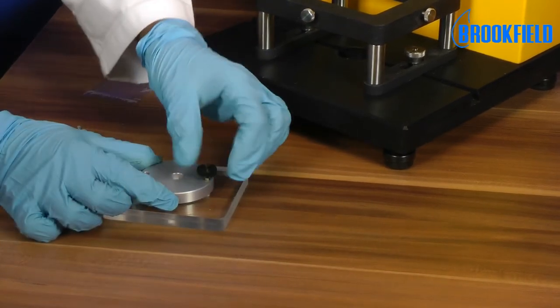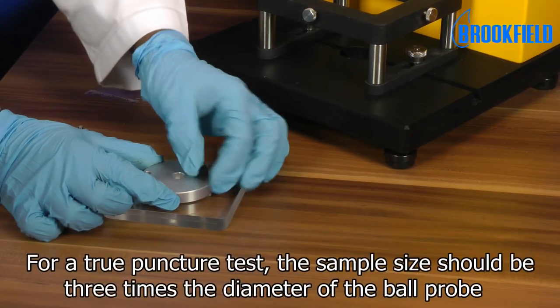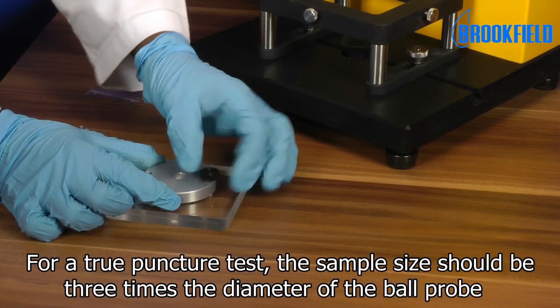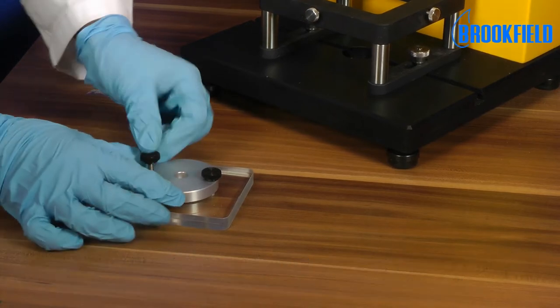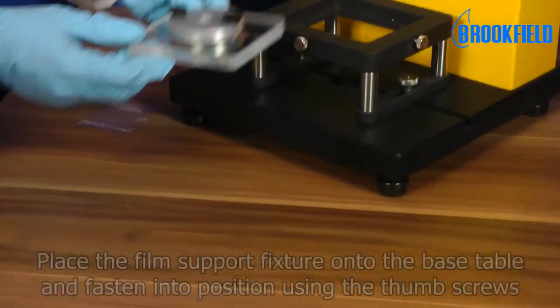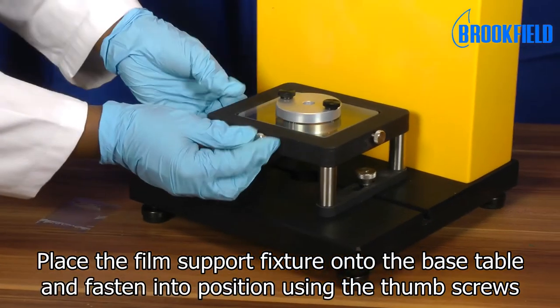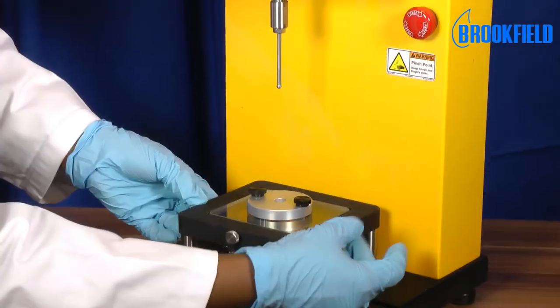Please note that the sample size is very important for a puncture test. For a true puncture test, the sample size should be three times the diameter of the ball probe. Place the film support fixture onto the base table and fasten into position using the thumb screws.